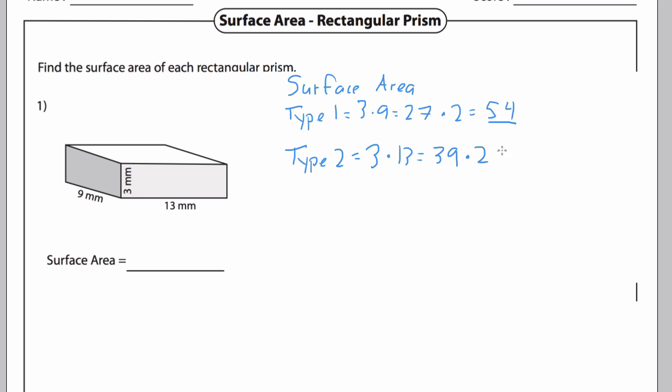Finally, type 3 is 13 and 9, which is the bottom and the top—they're equal. So 13 times 9 is 117, times 2 is going to give me 234.